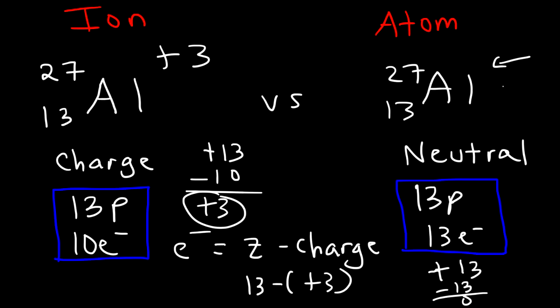Ions differ from atoms based on the number of electrons. Whenever you have a substance with an equal number of protons and electrons, it's neutral. When the protons and electrons are different, the substance will be charged, and in the case of an atom, it becomes an ion when it has a different number of protons and electrons.